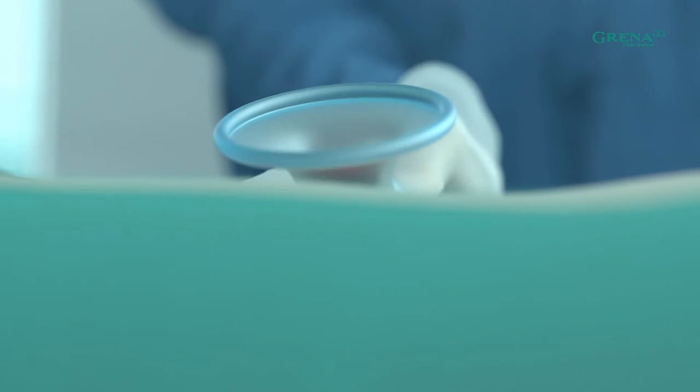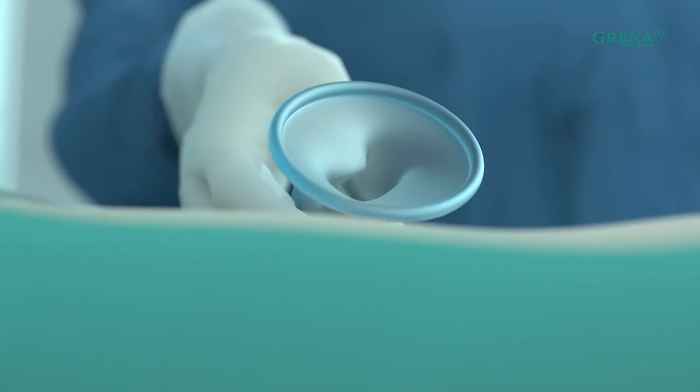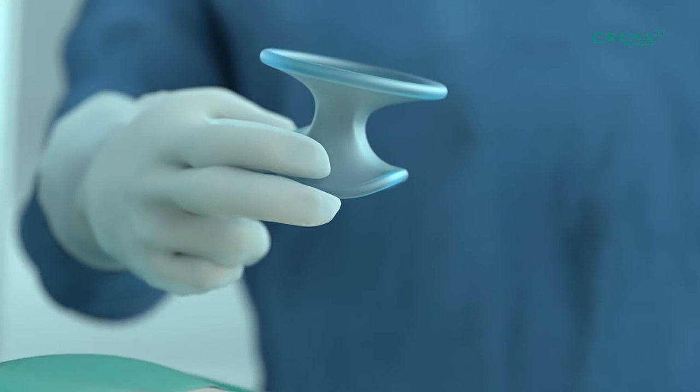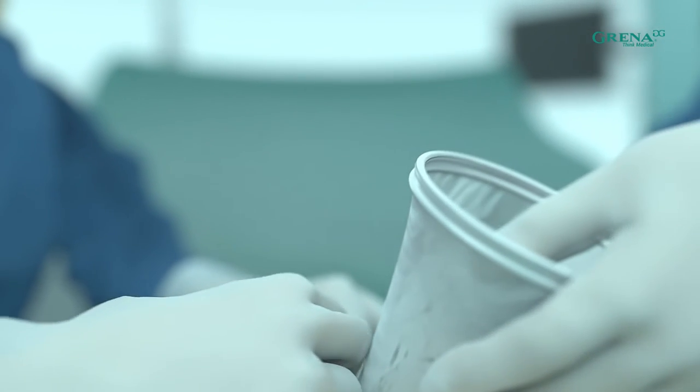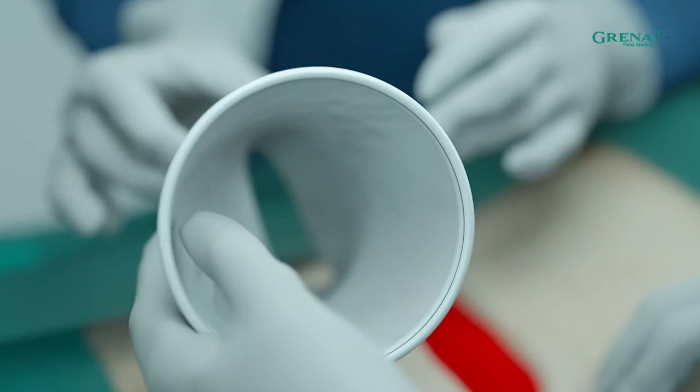To remove the retractor, put your hand inside the wound, grab the green ring, and gently pull it out through the incision. After removing the retractor, always check the hemostasis of the wound's edges.